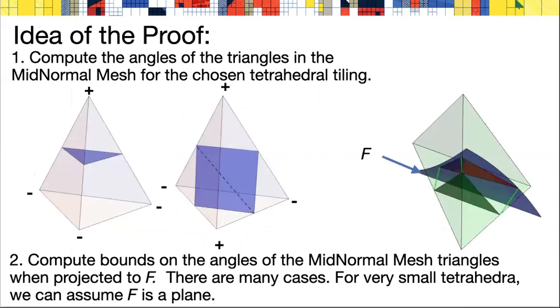Let me talk in the last few minutes about the idea of the proof. The goal is to compute the angles of the triangles produced by the GradNormal algorithm. The first step is to compute the angles in the midnormal mesh. This is very easy. There's a finite number of triangles in a fixed tetrahedral shape, and we can compute their angles, and they all turn out to be between 45 and 90 degrees.